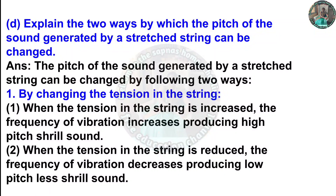(d) Explain the two ways by which the pitch of the sound generated by a stretched string can be changed. Answer: First, by changing the tension in the string — when tension is increased, the frequency of vibration increases, producing a high pitch shrill sound; when tension is reduced, the frequency decreases, producing a low pitch less shrill sound.